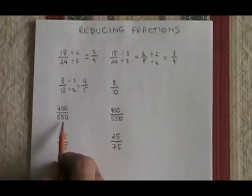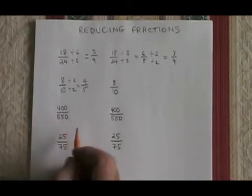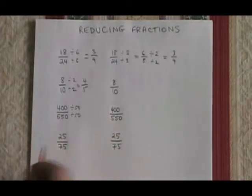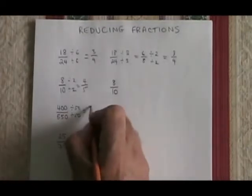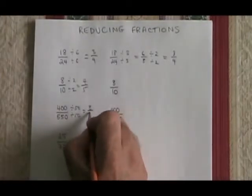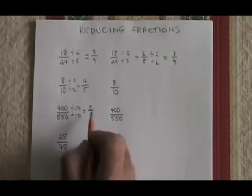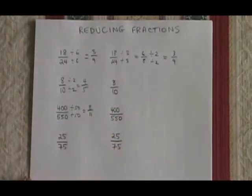Here we have 400 over 550, and I think the greatest common factor of these two numbers is 50. So I'm going to divide by 50, divide by 50. And I will get 8 over 11. 8 over 11 is the completely reduced fraction that is equivalent to 400 over 550.